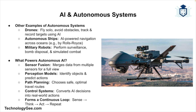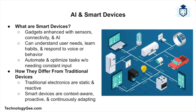What powers autonomous AI? To achieve autonomy, systems rely on sensor fusion — combining input from multiple sensors to understand surroundings. They use perception models to recognize objects and predict behavior, path planning to decide the safest and most efficient route, and control systems to translate decisions into physical movement. Together, these form a closed loop of sensing, thinking, acting, and repeating.